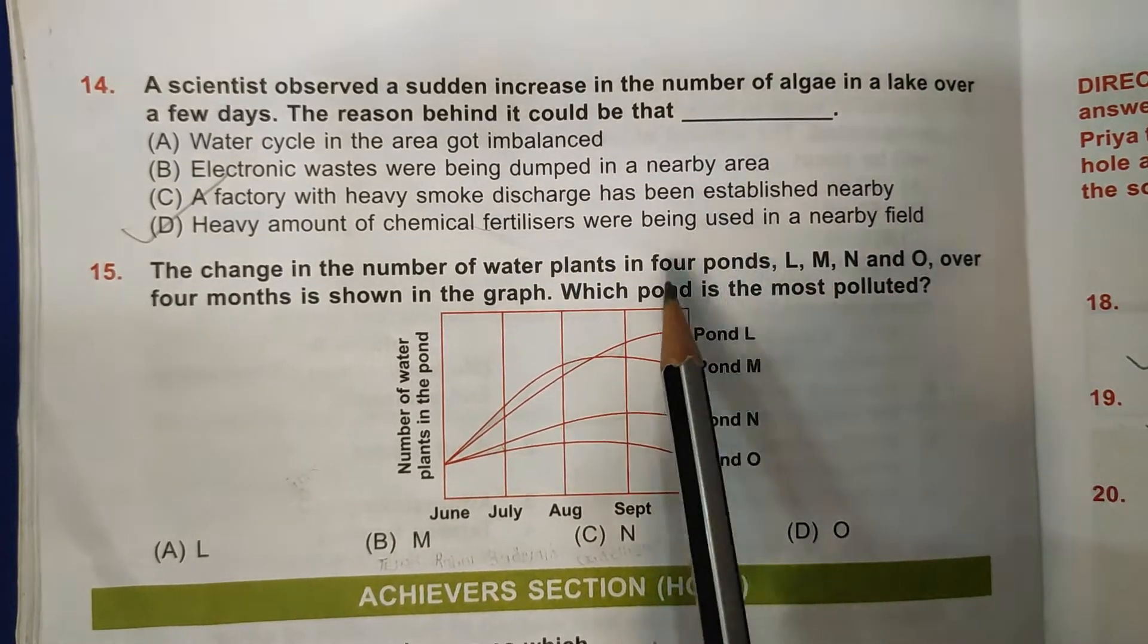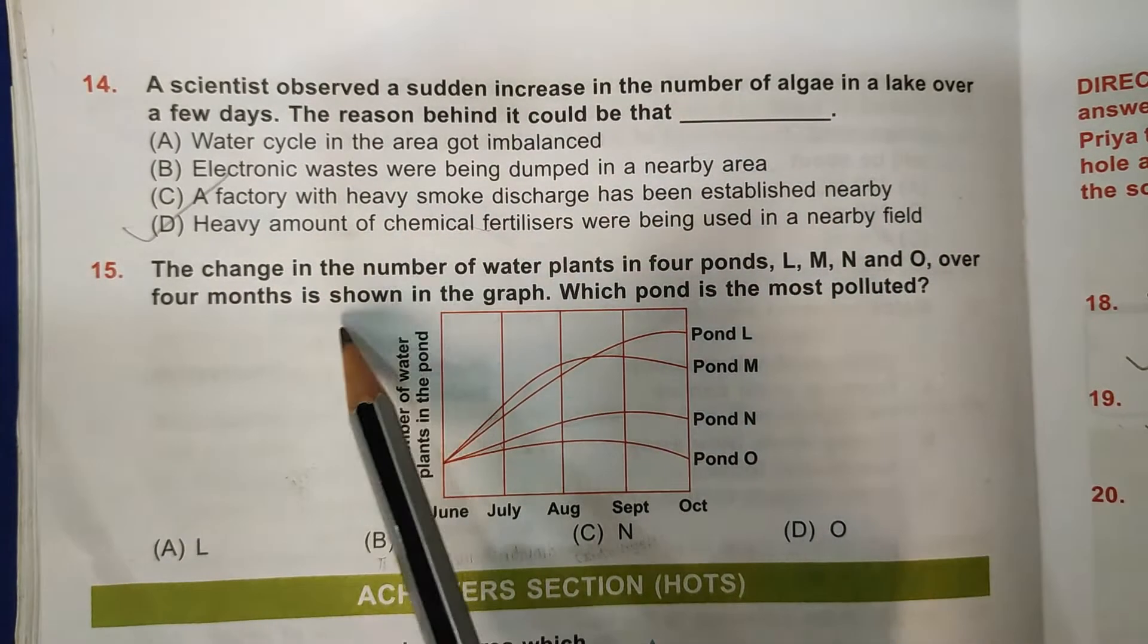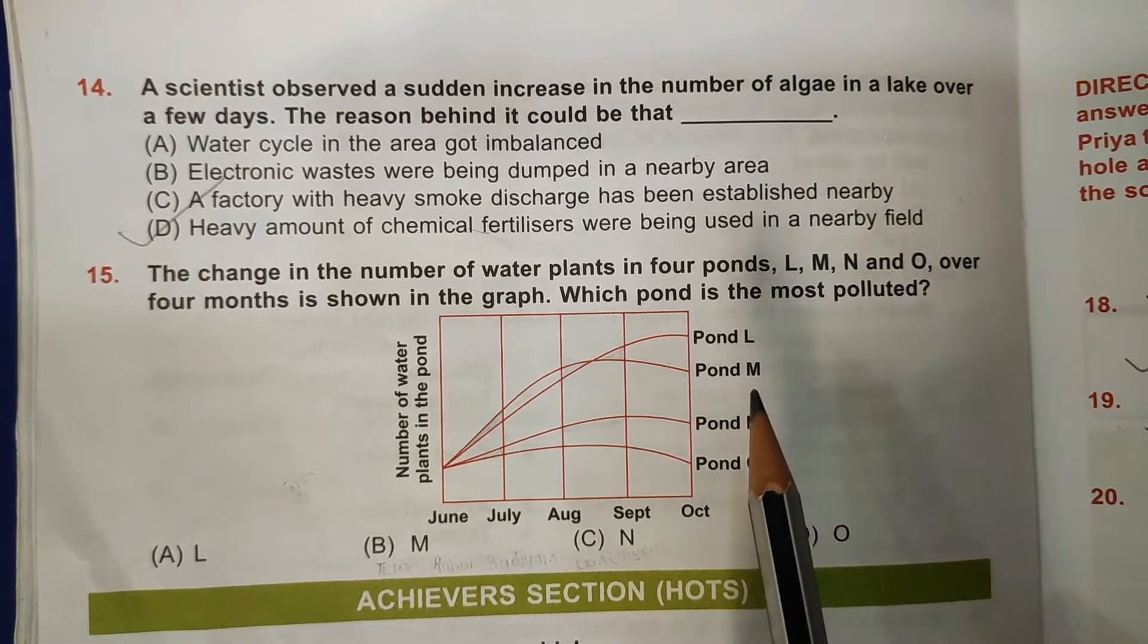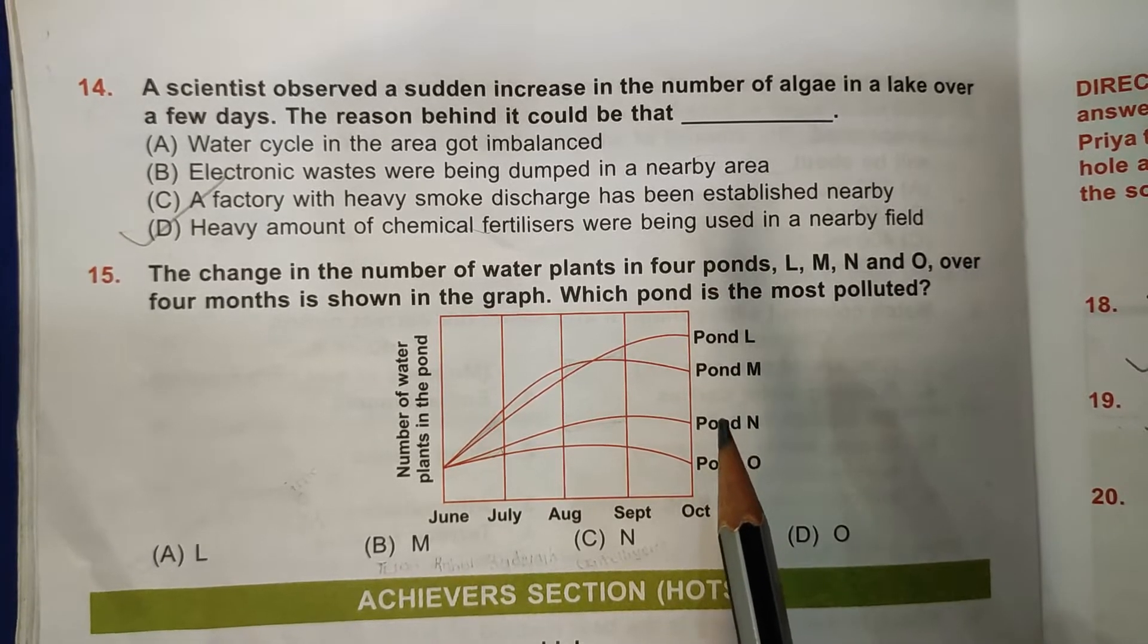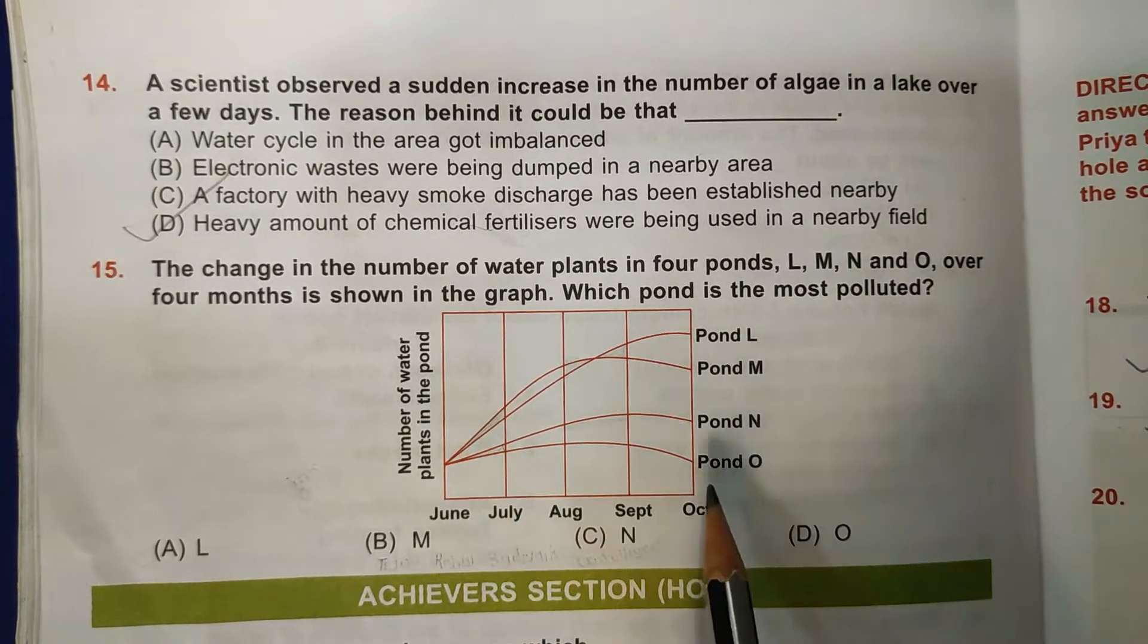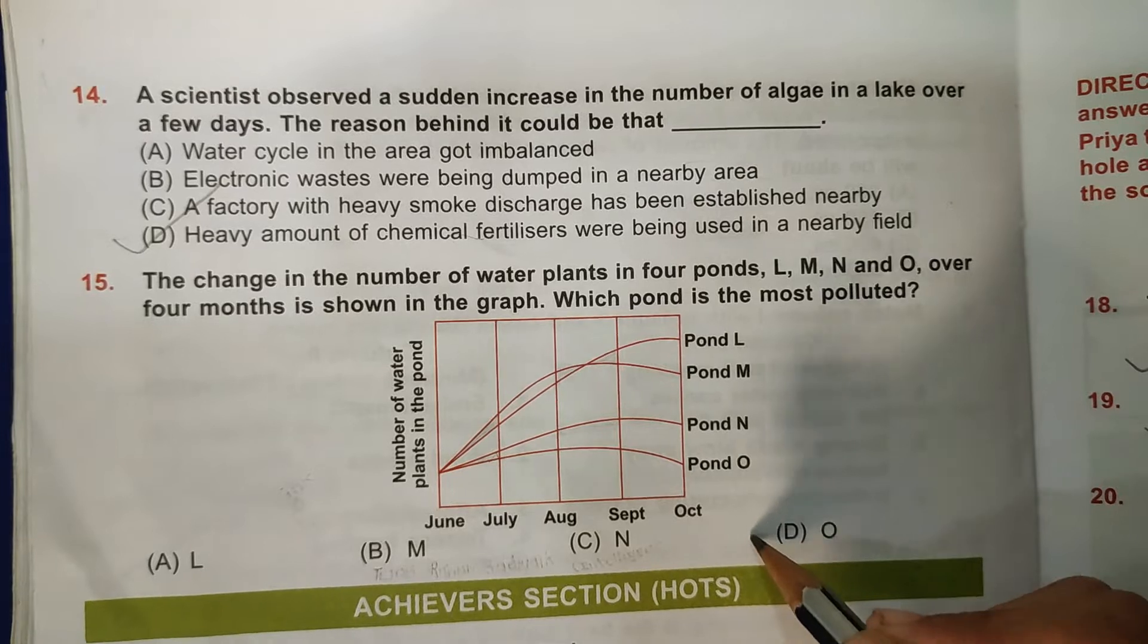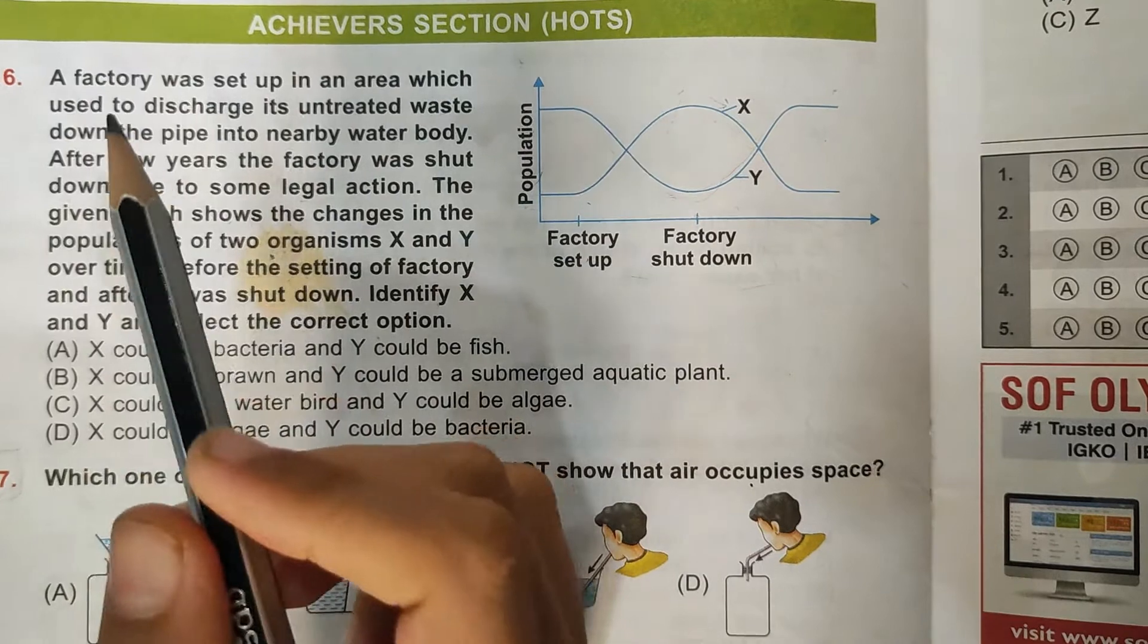Then 15th question: The change in the number of water plants in four ponds L, M, N, and O over four months is shown in the graph. Which pond is the most polluted? So here, polluted water affects the growth of the water plant. From the graph, number of plants growing in pond O is less, so pond O is the most polluted, so it is the correct answer.